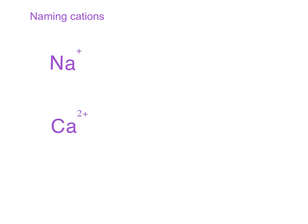To name them, Na plus, it's pretty easy. It's called sodium ion. Sodium becomes sodium ion. Calcium becomes calcium ion. So cations are very easy to name. It's just the name of the metal ion.